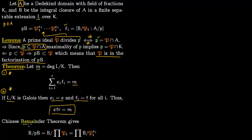We will prove part one now and part two in a separate lecture. We are going to use the Chinese Remainder Theorem. We write B modulo PB as B over the product of Pi to the Ei, since we are taking that product, where i goes from 1 to R precisely as given in the factorization. The Chinese Remainder Theorem then gives us B/PB isomorphic to the product of B modulo Pi to the Ei.